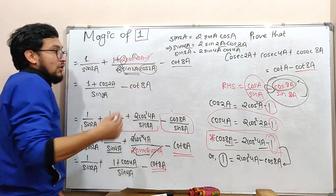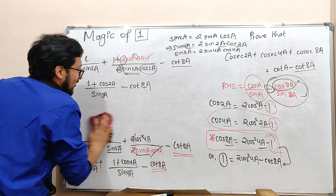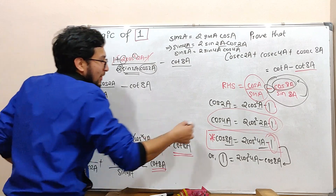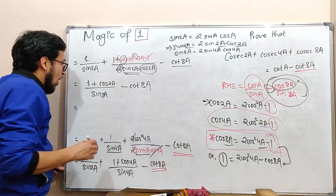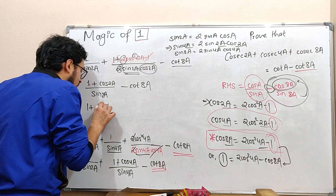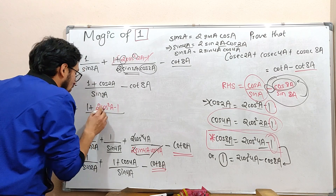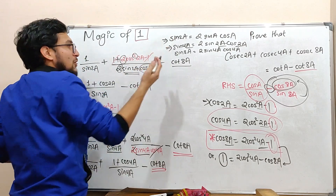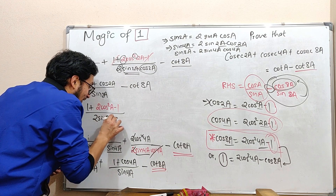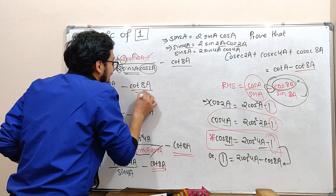If you want to do this, how do you do it? Very good — you made 2, brother. Now add 1 to this formula. Simple: 1 plus cos 2, and 2 cos² A minus 1. What do you do? Sin 2 is this — there is a board. 2 sin A, cos A minus 1, cos A minus 1.